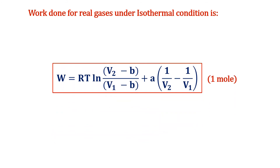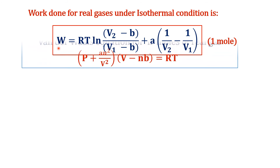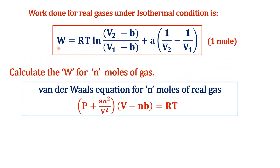We have now derived the work done for real gases under isothermal conditions. The final equation combining both parts is: W = RT · ln[(V2 − b)/(V1 − b)] − a(1/V2 − 1/V1). Remember this equation is derived for one mole of real gas. If the two volume values V1 and V2 are given for a particular temperature, we can calculate W because a and b are constants.